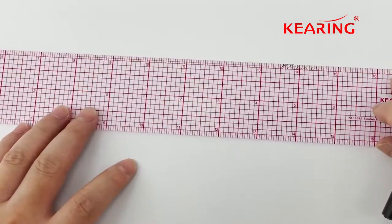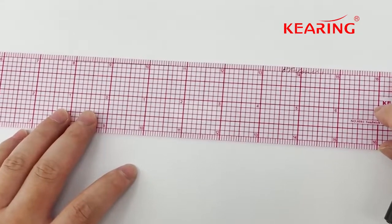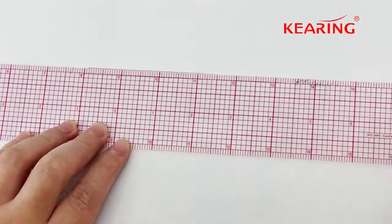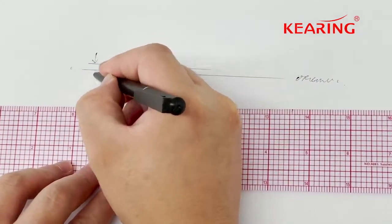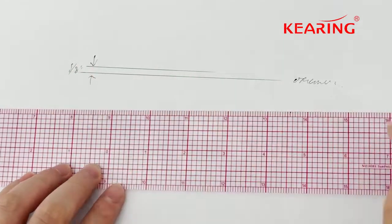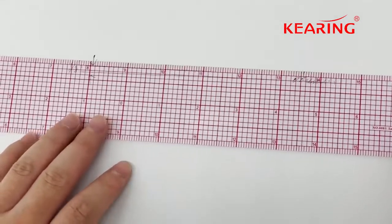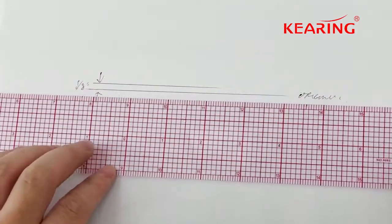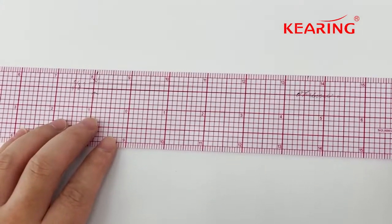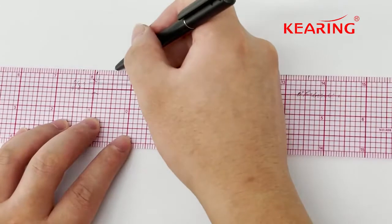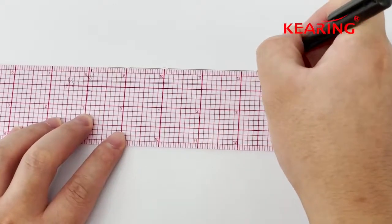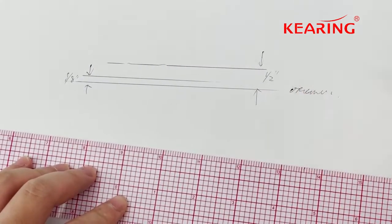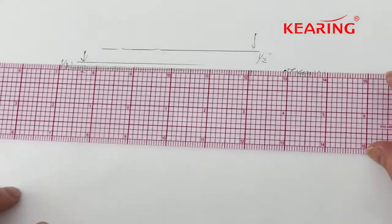On the paper, if we want to go for a one-eighth inch seam allowance, we can just draw a line here, then we can get one-eighth. And if we want to get a bigger size, just remove it here and join. So this part, half inches here, you can go either way, any way you like.